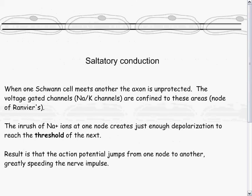This allows for something called saltatory conduction — a conduction that jumps from one node of Ranvier to another. Essentially, these Schwann cells ensure that the voltage-gated channels, the sodium-potassium channels, are confined to the nodes of Ranvier. The areas that are encased by the Schwann cell have no sodium or potassium channels.